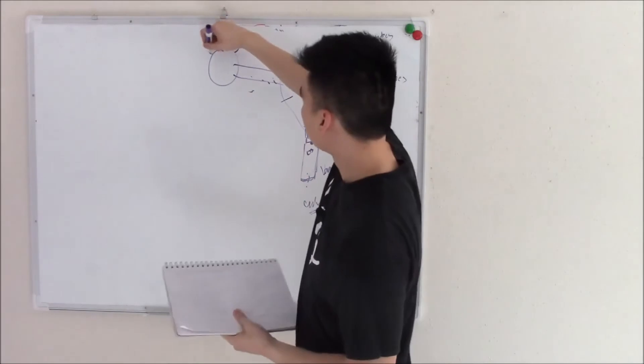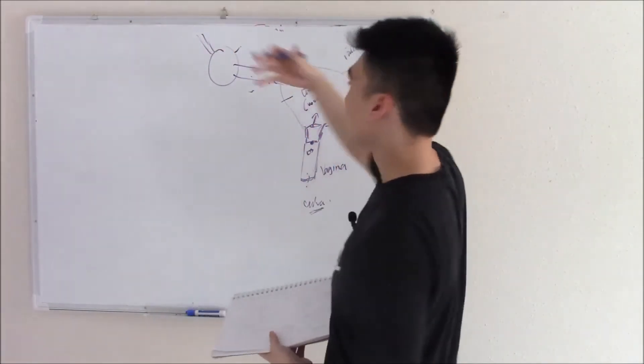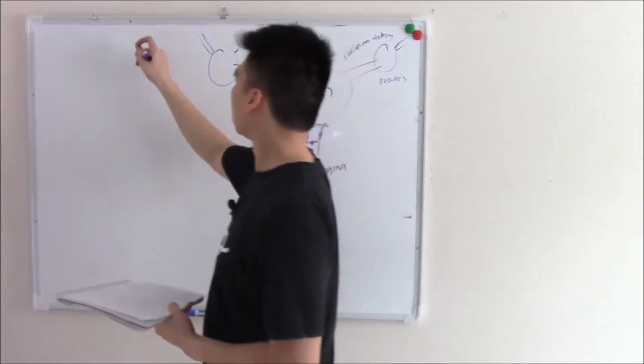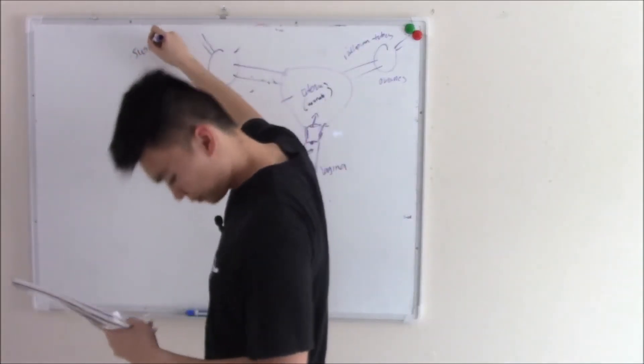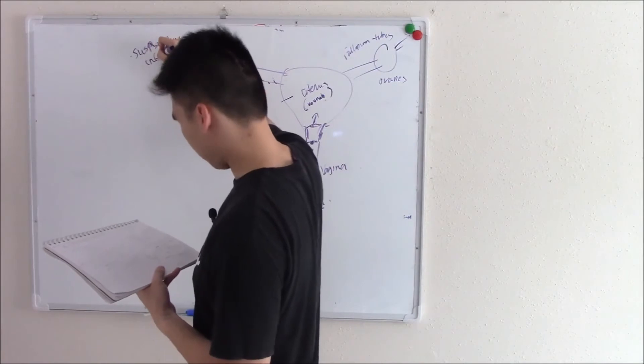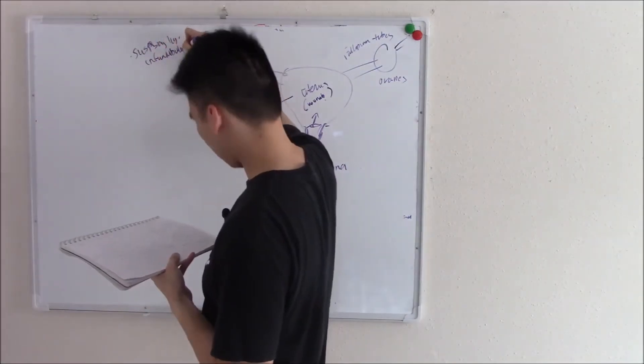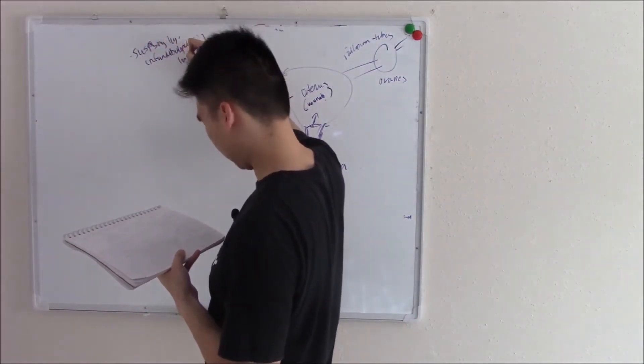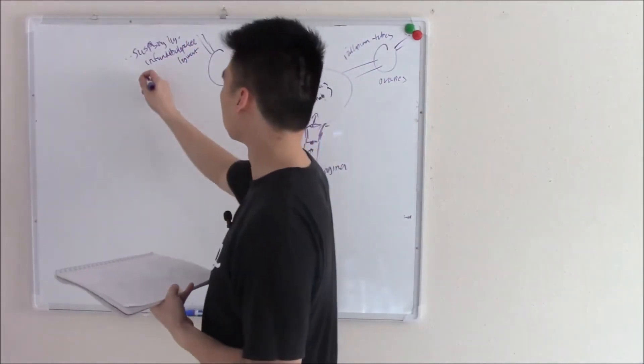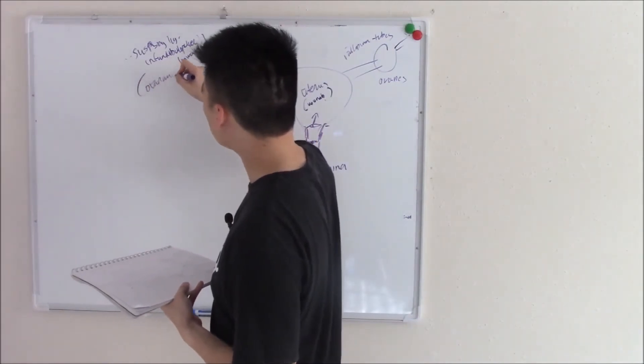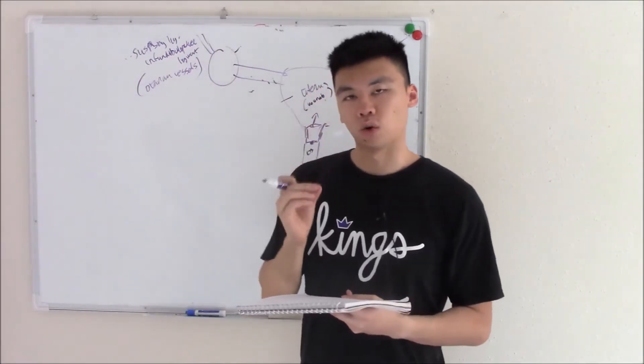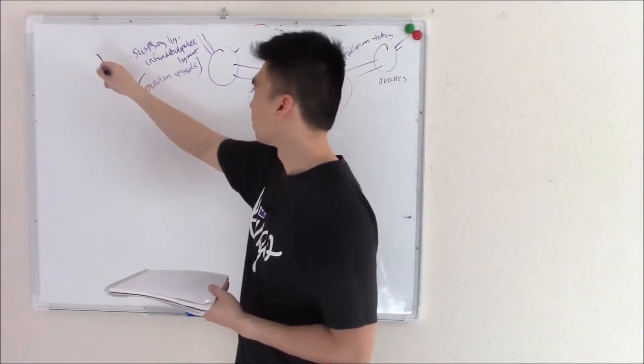The ligament that suspends the ovaries is called your suspensory ligament, also known as infundibulopelvic ligament. You need to know this because not only does it suspend your ovaries, but it contains the blood vessels.